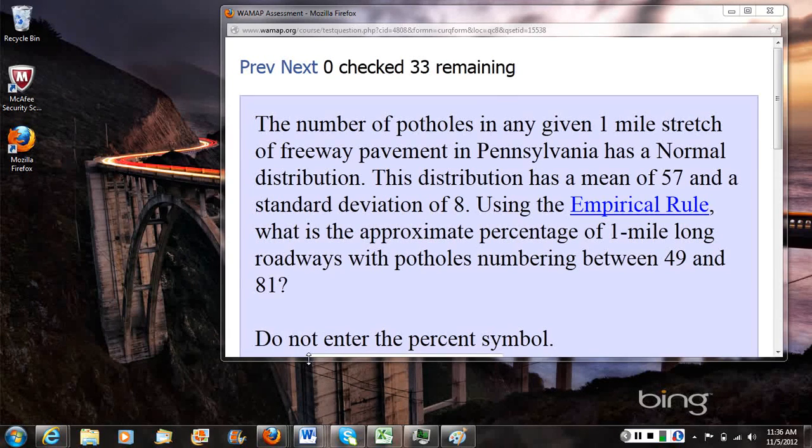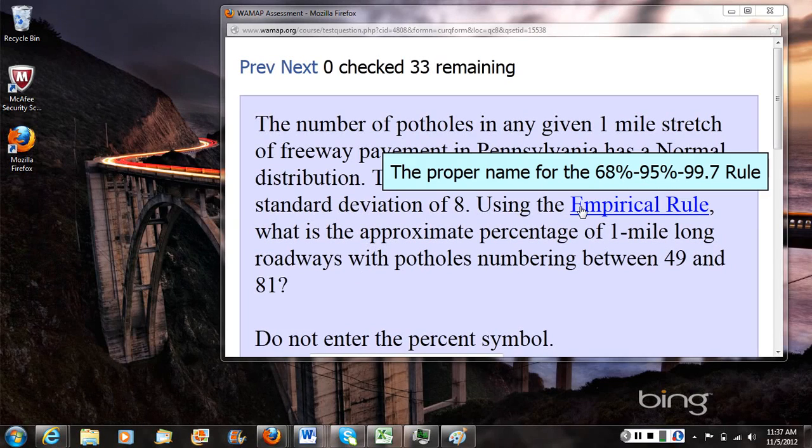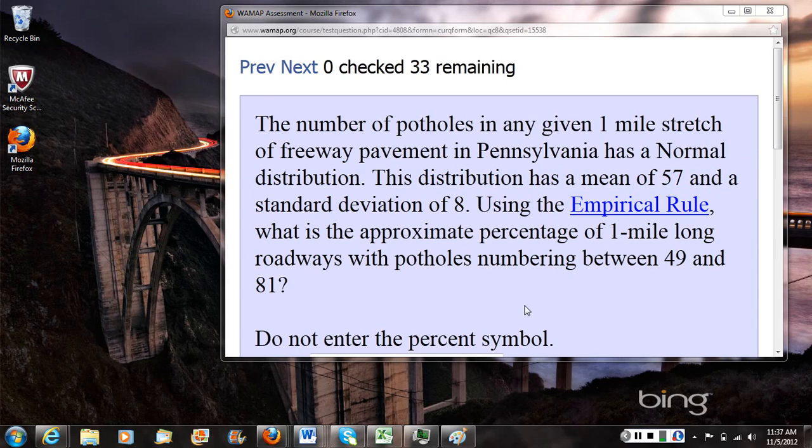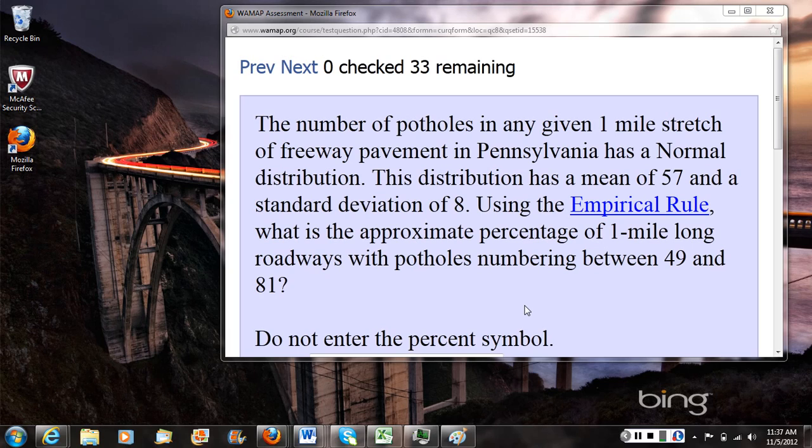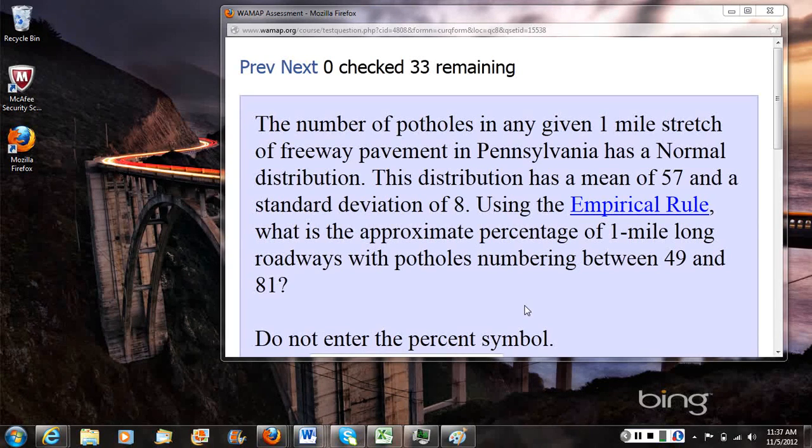All right, so to get started here, first let's notice that they're asking us to use the empirical rule, which, as the Moore textbook refers to it, the 68%, 95%, 99.7% rule. So the first thing I want you to keep in mind is we're not going to be using our calculator or the normal CDF or inverse norm commands to find an answer here. The calculator would give us a more exact answer, but the empirical rule gives us tools for estimating that answer in a way that has a little more intuition behind it or that we could do even if we didn't have a calculator. So WAMAP is going to be looking for the answer that the empirical rule gives you, even though that answer is approximate as compared to the exact answer you could get on the calculator.